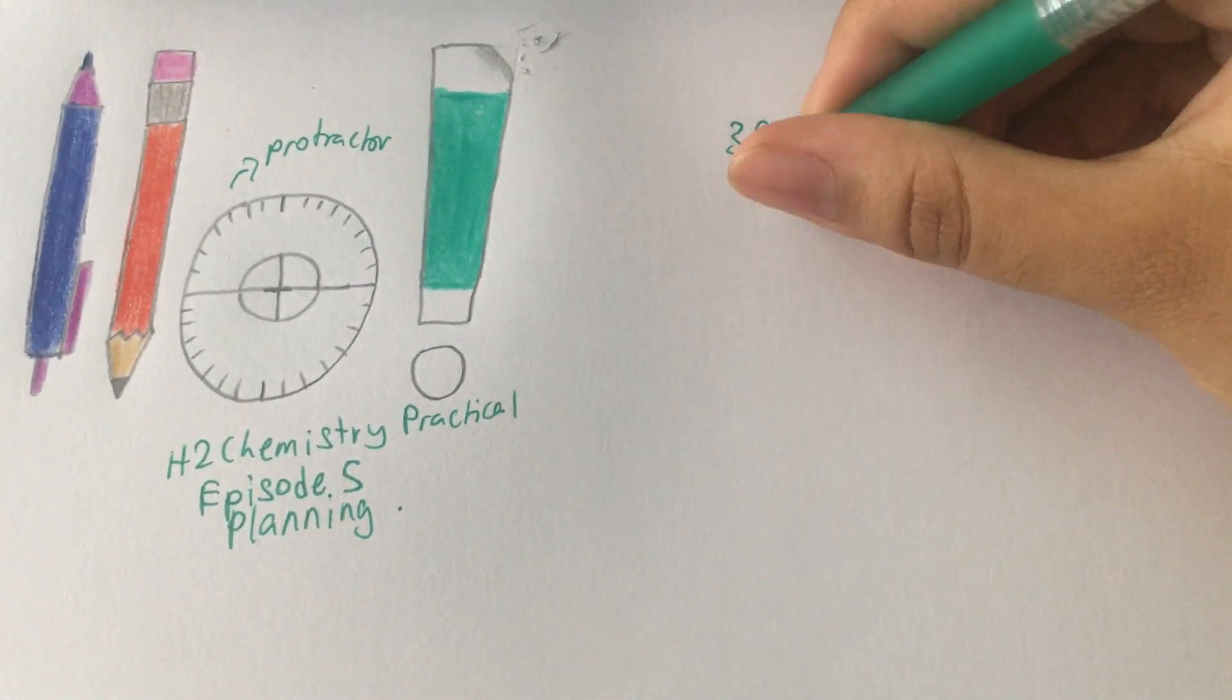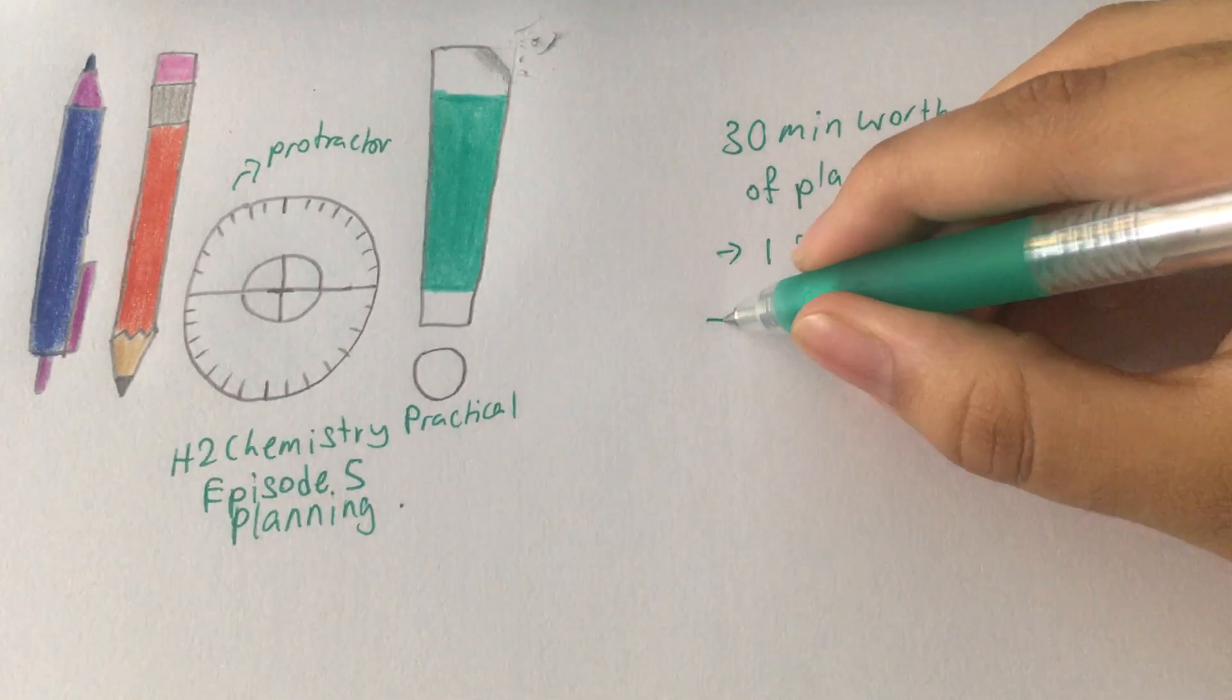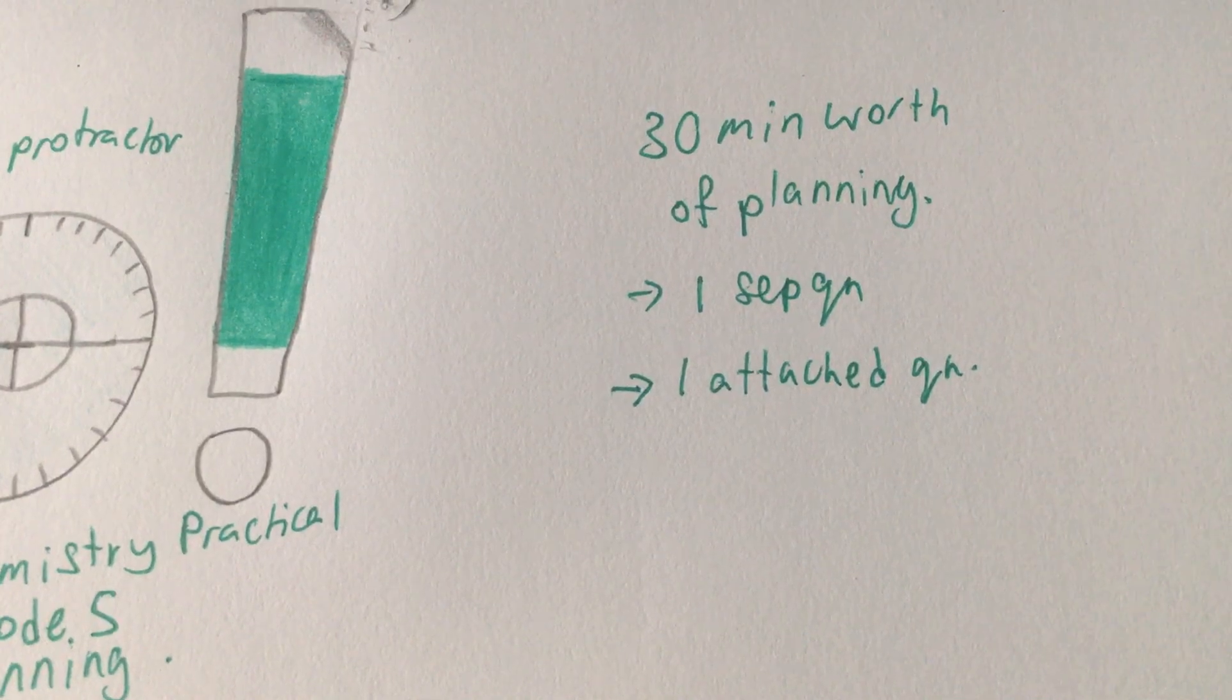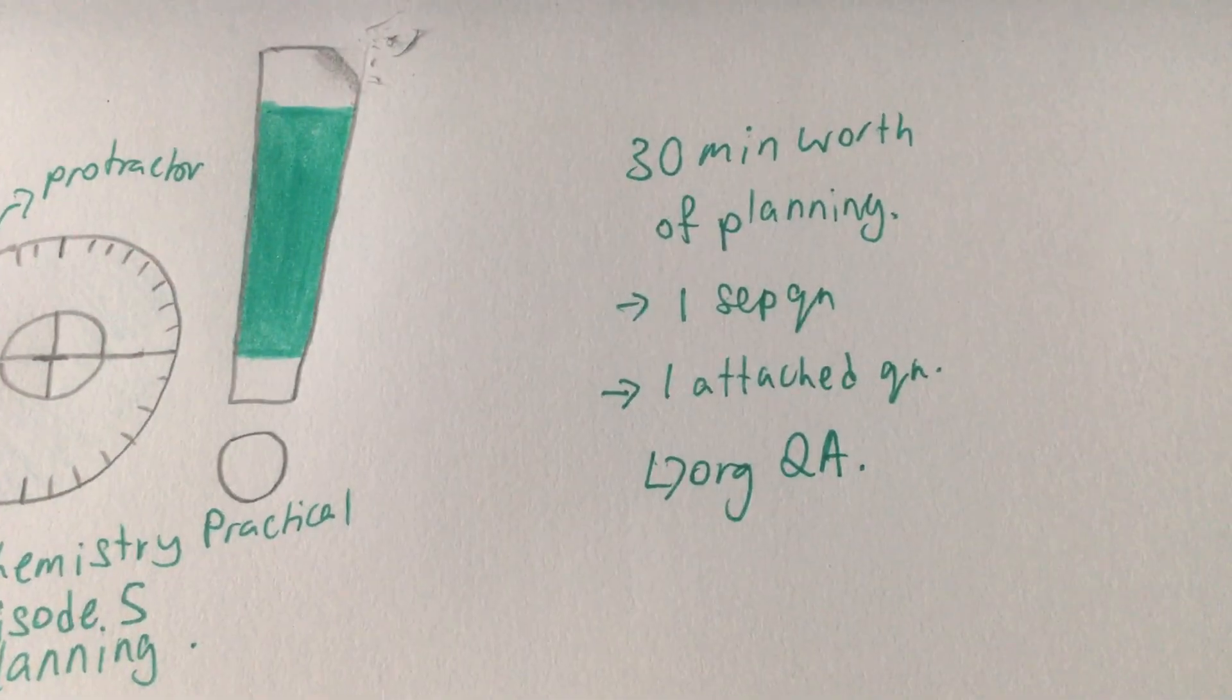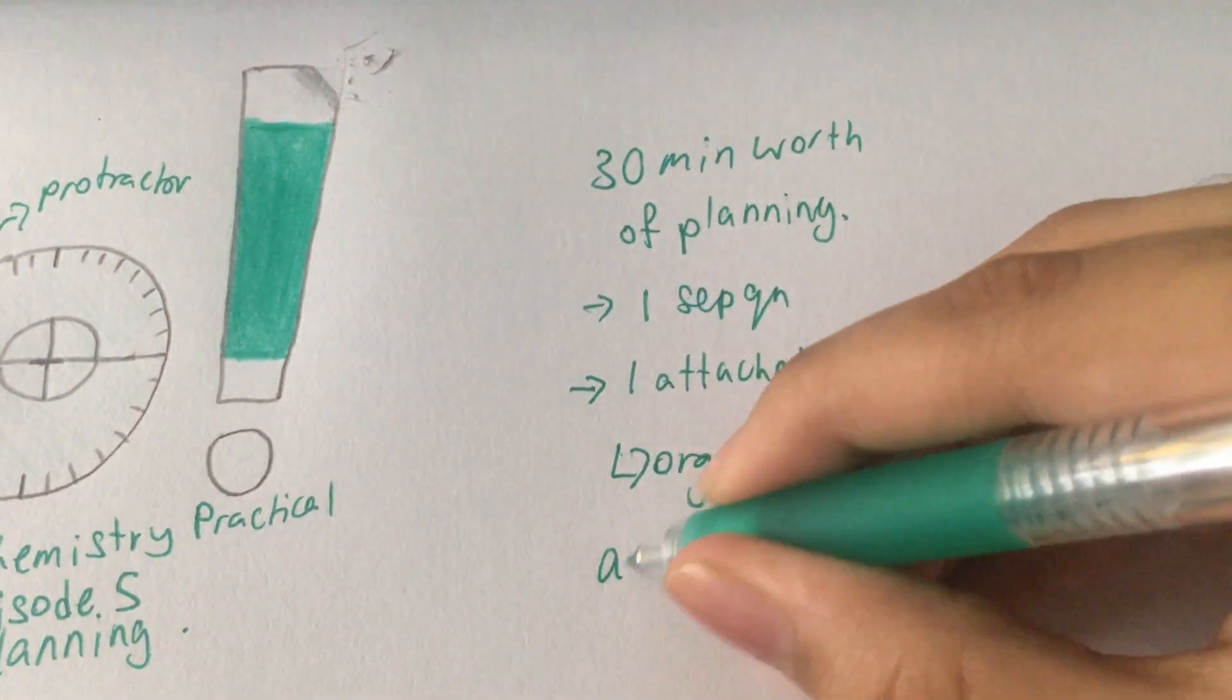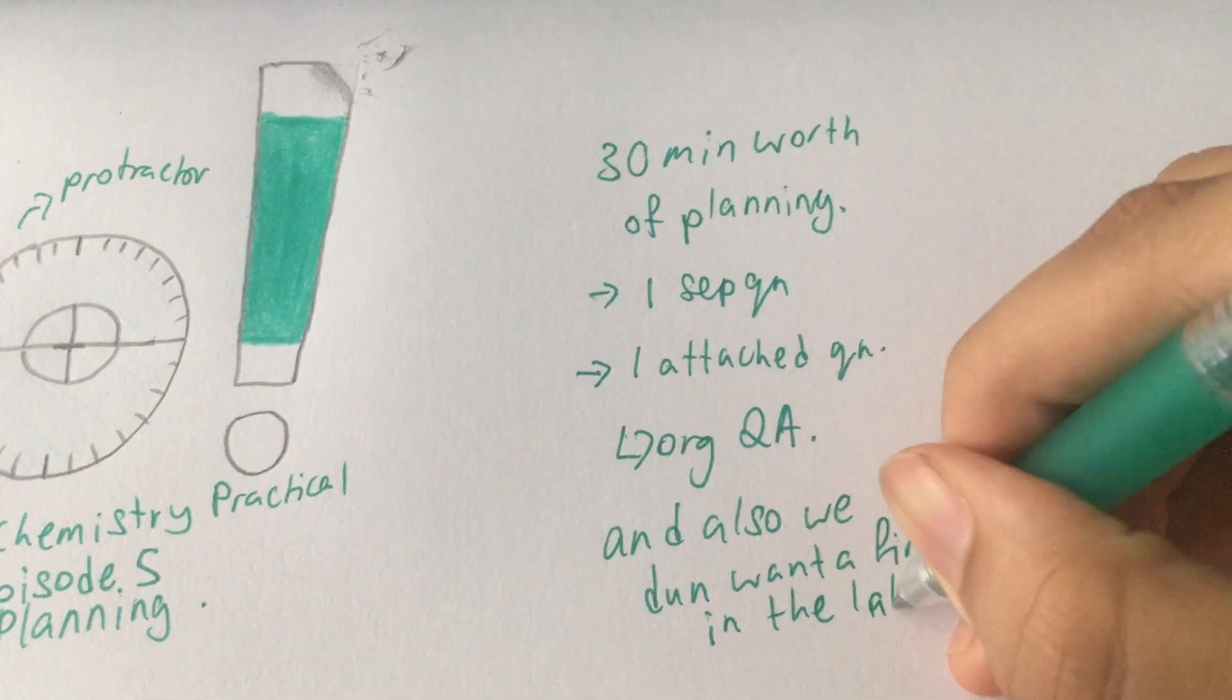So I think this is usually how they do it. They like to put a separate question which is a planning, and it could be anything. It can be like titration or energetics or kinetics or any kind of experiment that they can do. And then there will be one which is attached to the QA, which will usually be asking about organic QA because it tends to be harder to do that experimentally or hands-on because of how some organic substances are somewhat toxic, and also because we may not actually know how to experimentally do some of the techniques in organic QA.